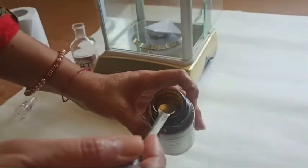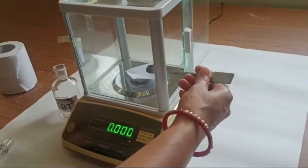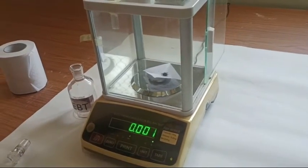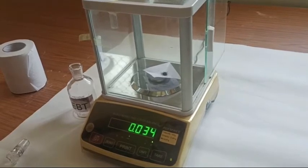So this is the eriochrome black tea. How it looks guys. You can see it. Now I put it over my paper. And here is the weight of the sample which is kept on this white paper.